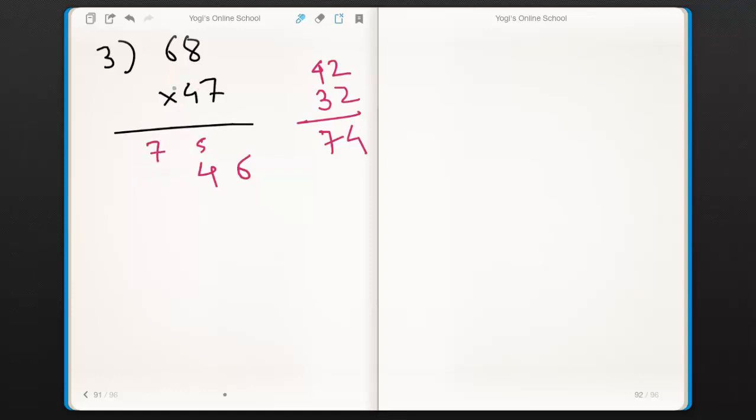Now 6×4 is 24. 7 plus 4 is 11. Write 1, take 1 as carry. 1 plus 2 is 3. Therefore our final answer is 3196.